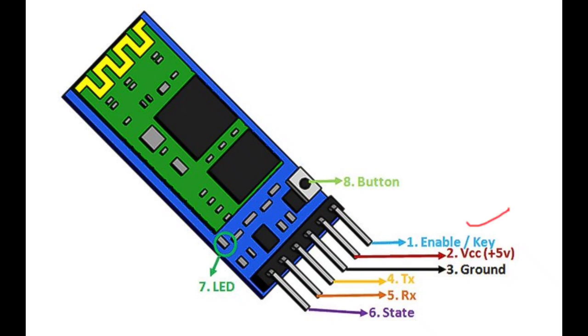The enable pin is used to toggle between data mode and AT command mode. In data mode it is set low, and in AT command mode it is set high. By default, it is in data mode.